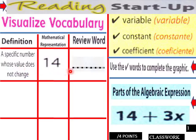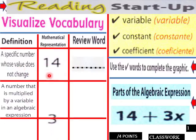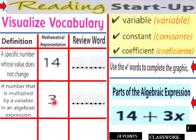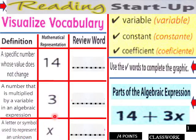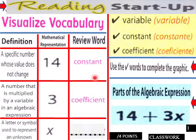Then the review word for the next part: a number that is multiplied by a variable in an algebraic expression — that would be coefficient. And then a number that falls into that category, and then the letter or symbol used to represent an unknown — that would be variable. So: constant, coefficient, and variable. This is page 1 of classwork, page 2 of classwork.